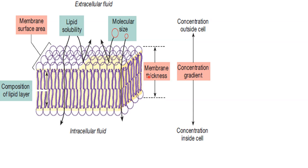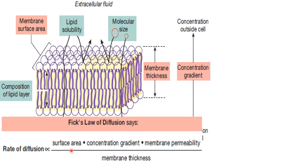Membrane thickness: when thickness of the membrane is more, rate of diffusion decreases. Concentration: when concentration increases, rate of diffusion increases. Rate of diffusion is directly proportional to surface area, concentration gradient, and membrane permeability; and inversely proportional to membrane thickness. Surface area is also important.